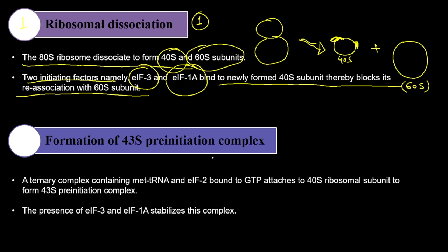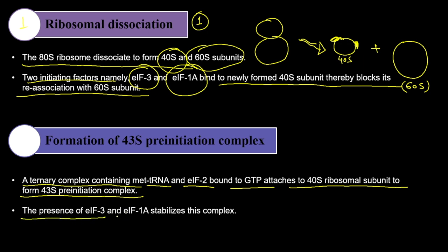The second step is the formation of the 43S pre-initiation complex. A ternary complex containing the initiator tRNA (met-tRNA), eIF2, and GTP attaches to the 40S subunit to form the 43S pre-initiation complex. The presence of eIF3 and eIF1A stabilizes this complex, while also blocking attachment so that the 80S ribosome is not prematurely formed.